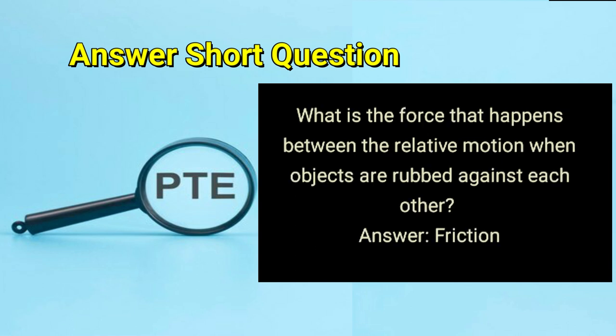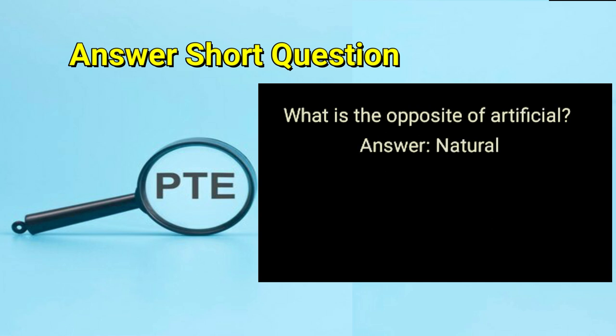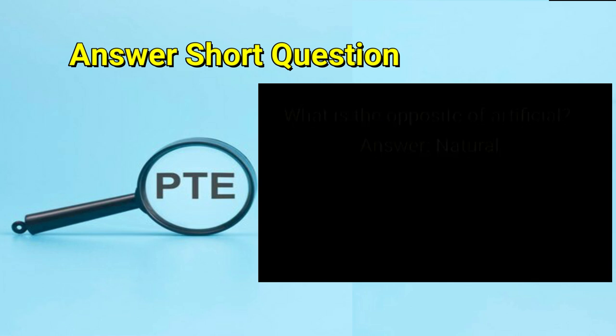What is the force that happens between the relative motion when objects are rubbed against each other? Answer: friction. What is the opposite of artificial? Answer: natural.